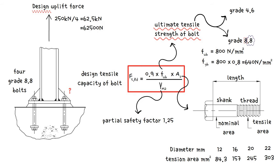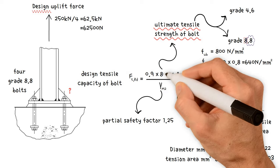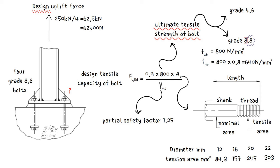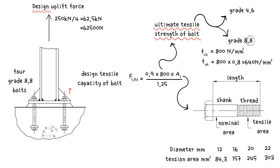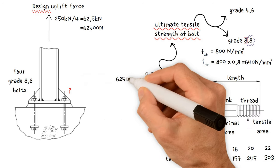As we mentioned, design tensile capacity of bolt equals 0.9 times ultimate tensile strength 800 N per millimeter squared, times the bolt tension area, which we need to figure out, divided by partial safety factor 1.25, equals design uplift for 62,500 N.